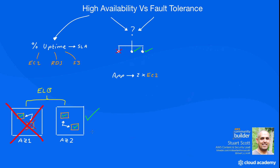Now let's look at fault tolerance, which expands on high availability to offer a greater level of protection should components begin to fail in your infrastructure. However, there are usually additional cost implications due to the greater level of resiliency offered, but the upside is that your uptime percentage increases and there is no interruption of service should one or more components fail.